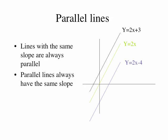Here's another line: y equals 2x minus 4. That's not one I had asked you to graph, but you can tell that because it has the same slope of 2, it's going to be parallel to both y equals 2x plus 3 and y equals 2x.